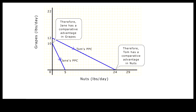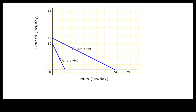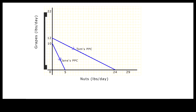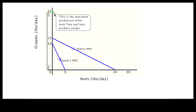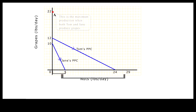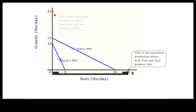To demonstrate this outcome, let's first generate a combined production function. The vertical intercept of the combined production function is the sum of the maximum grapes output from Tom and Jane when both are producing grapes exclusively. The horizontal intercept is the sum of the maximum nuts output from Tom and Jane when both are producing nuts exclusively.